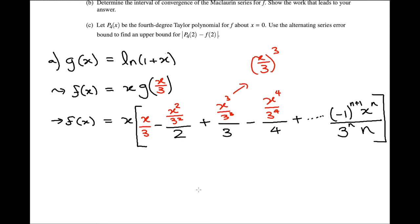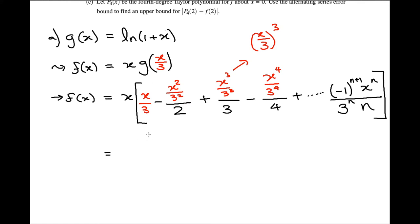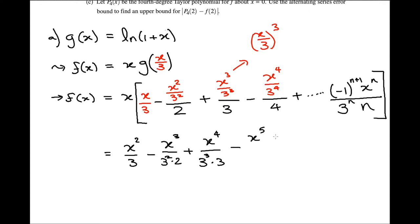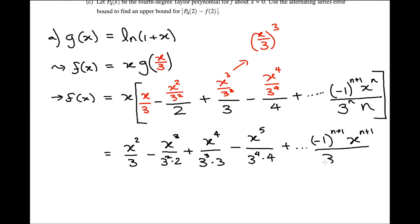Now we can just distribute the x to all of these and we'll have our final answer. So we'll have x²/3 minus x³/(3²·2) plus x⁴/(3³·3) minus x⁵/(3⁴·4), and so on. The only difference in the general term is that instead of x^n we're going to have x^(n+1), so the general term is (-1)^(n+1) · x^(n+1) / (3^n · n). That would be your final answer for part a.